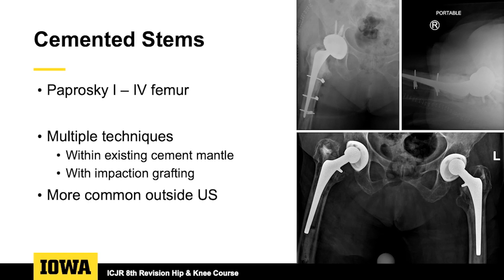You can use cemented stems in almost any classification of bone loss, and there are a bunch of different techniques that people will use. It's much more commonly used outside of the United States. You can use it within the existing cement mantle if you have a loose femoral component but good host bone-to-cement fixation. You can also use it with impaction grafting.